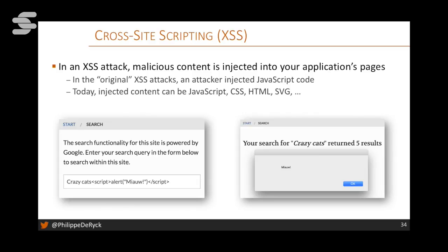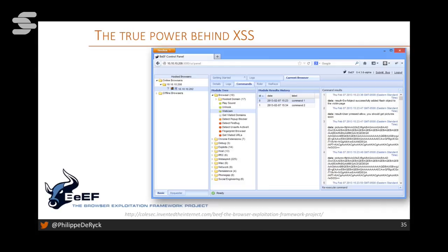There are frameworks like BEEF — the Browser Exploitation Framework — that come pre-configured with many commands. Once you inject the hook script, you can select commands like 'get pictures from the user's webcam' and hit execute, and in comes the picture data. This works because the website where the hook is running already has permission to access the webcam. Once permission is given, all scripts running in that web page can use those permissions — meaning an advertisement on a page could grab pictures from your webcam.